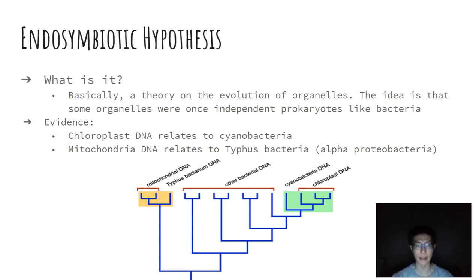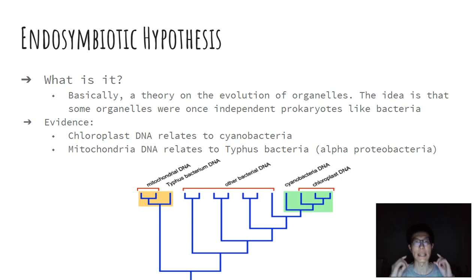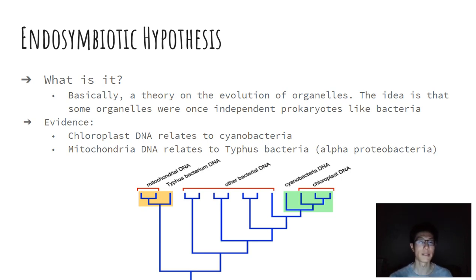There was an individual who proposed this concept of the endosymbiotic hypothesis, which basically means that in the past, these organelles — like mitochondria and chloroplasts — are actually their own separate organisms. They're kind of like bacteria floating around in the surroundings, and then some other cell perhaps engulfed them. But instead of digesting them, ultimately over time, evolution caused this event that allowed for that original bacterium to become part of this new cell.